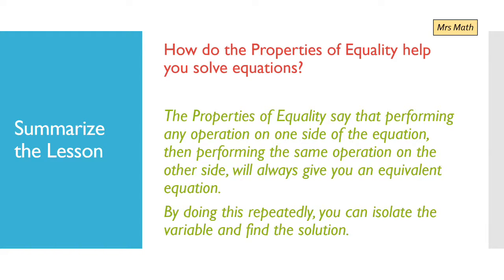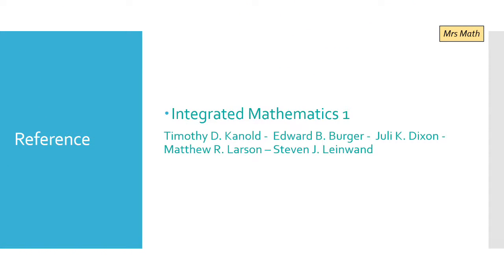To summarize the lesson: how do the properties of equality help you solve equations? The properties of equality say that performing any operation on one side of the equation, then performing the same operation on the other side, will always give you an equivalent equation. By doing this repeatedly, as we did in the examples, you can isolate the variable and find the solution. Hope you enjoyed it and understood — and wait for the third video on equations.